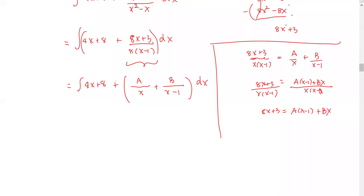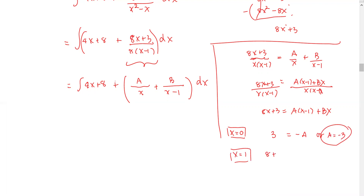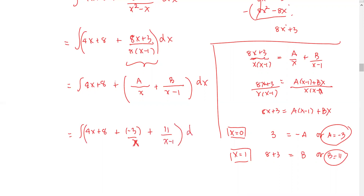We find A and B. First, let x equal 0: the left-hand side gives 3, and the right-hand side gives negative 1 times A, so A equals negative 3. For x equals 1, the left-hand side gives 8 plus 3 equals 11, and the right-hand side gives B, so B equals 11. Our integrand then becomes the integral of 4x plus 8 plus negative 3 over x plus 11 over x minus 1, with respect to x.